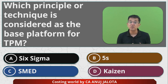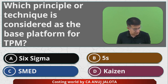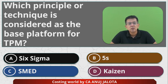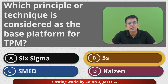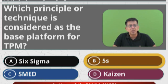TPM has nothing to do with Six Sigma, SMED, or Kaizen Costing. It is an independent technique based upon 5S. So out of the four options, the correct answer is 5S — option B. I'll see you next time in another question. Till then, happy learning!